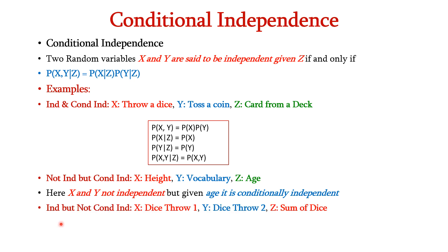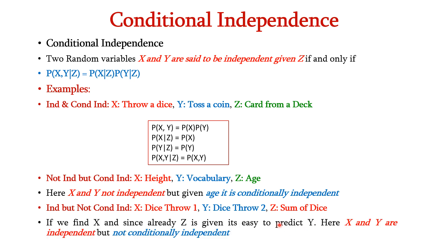Now let us see the case of independent but not conditionally independent. We have dice throw 1 as event X, dice throw 2 as event Y, and the sum of the dice as Z. If we know X and Z is already given, it is easy to predict Y. Therefore X and Y are independent, but not conditionally independent given Z. Thus we have covered conditional independence. In this lecture we discussed total probability, Bayes' rule, and conditional independence. Thank you.